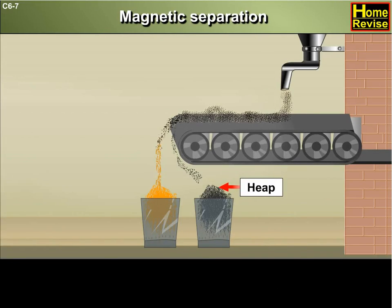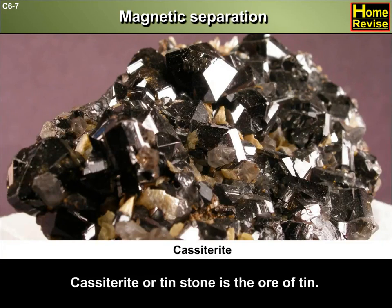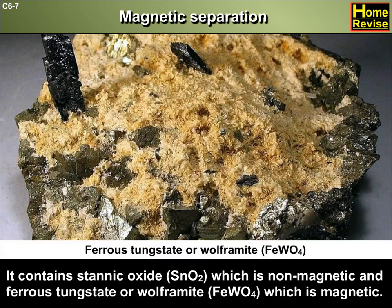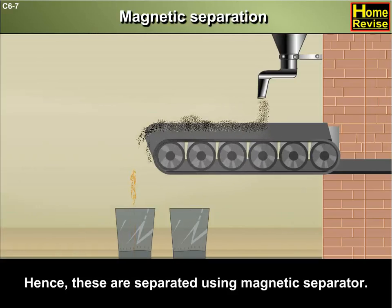For example, Cassiterite or Tin Stone is the ore of tin. It contains stannic oxide, i.e. SnO₂, which is non-magnetic, and ferrotungstate or Wolframite, i.e. FeWO₄, which is magnetic. Hence, these are separated using a magnetic separator.